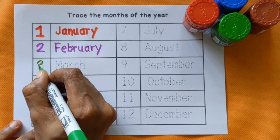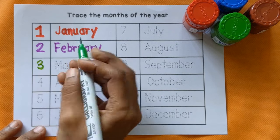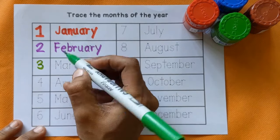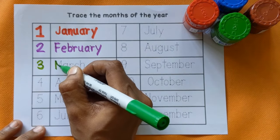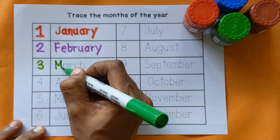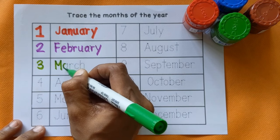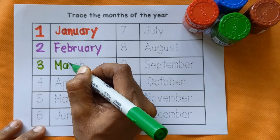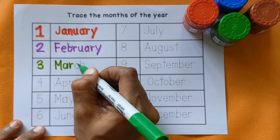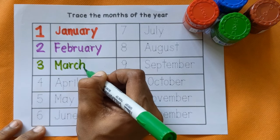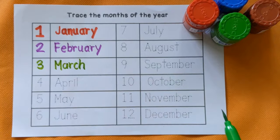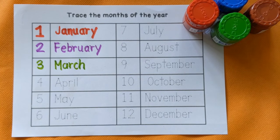3. M, A, R, C, H — March, light green color.